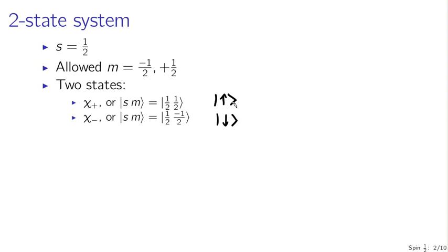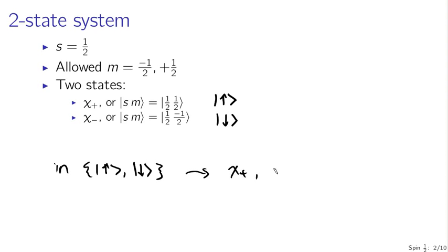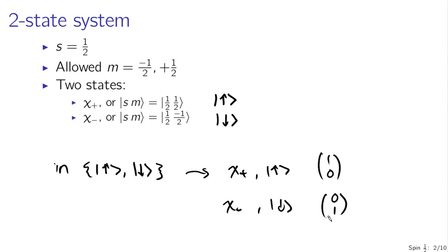Since we're working with a two-state system, no matter what our operator is, it's going to have a representation as a two-by-two matrix. Chi plus expressed in the basis of spin up and spin down is simply the column vector (1, 0), and chi minus or spin down is (0, 1). Our operators acting on these two-component vectors will also be two-by-two matrices.